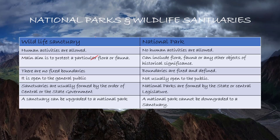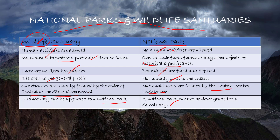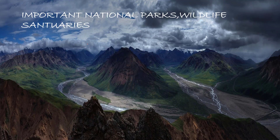The difference between a wildlife sanctuary and a national park: A wildlife sanctuary aims to protect particular flora and fauna — human activities are allowed, boundaries are not always fixed, and it is open to the general public. A national park also protects flora, fauna, and areas of historical significance — human activities are restricted, boundaries are fixed, and it is not usually open to the general public. A sanctuary can be upgraded to a national park, but the reverse is not possible.